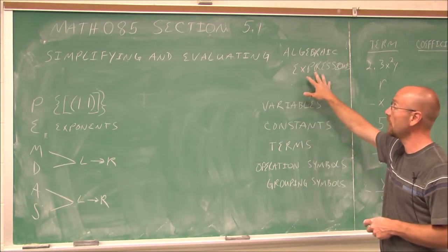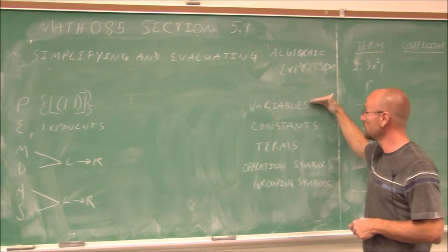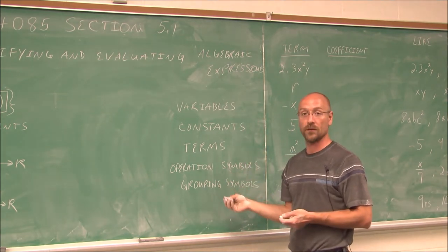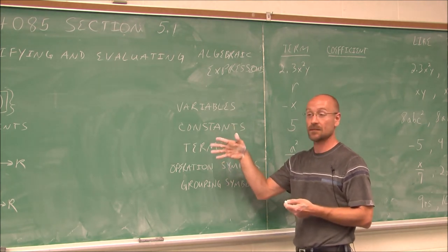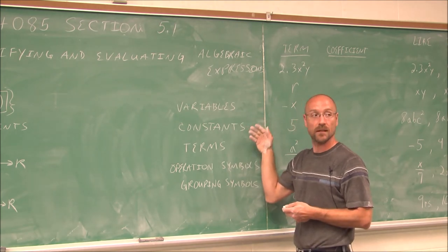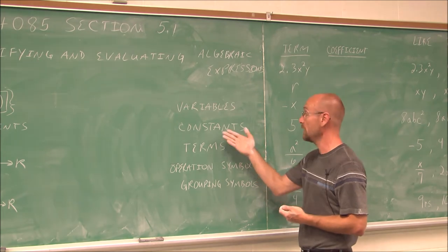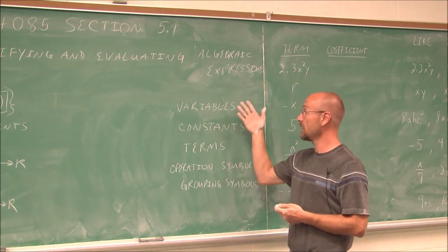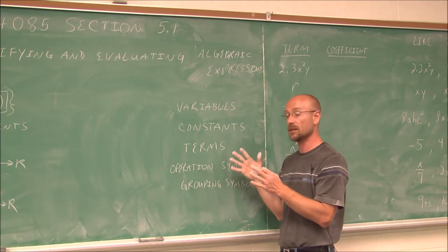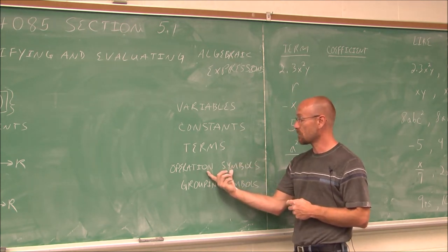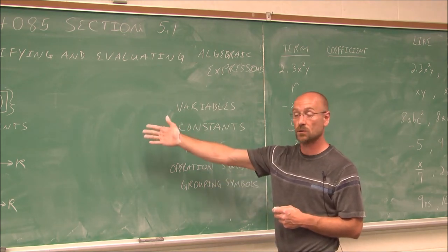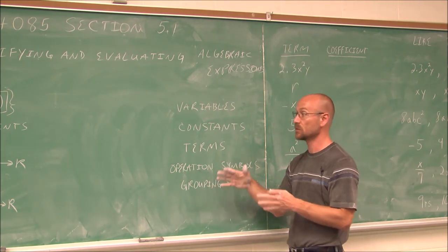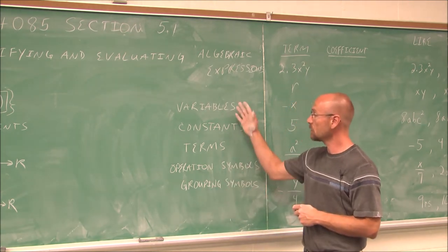Before we begin simplifying or evaluating algebraic expressions, we're going to do a little review. We have to know what a variable is — a variable is just a placeholder for an unknown value, a number we may know when we're given something to evaluate. We also have constants, which are numbers that we do know and won't change. Terms are the combination of numbers and variables raised to particular powers — the product of numbers and variables. We'll also see operation symbols and grouping symbols like parentheses or absolute values.